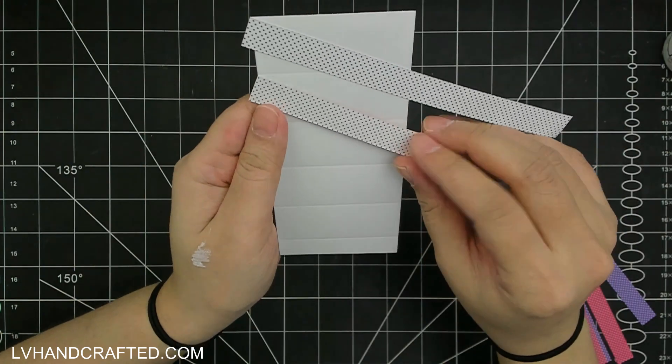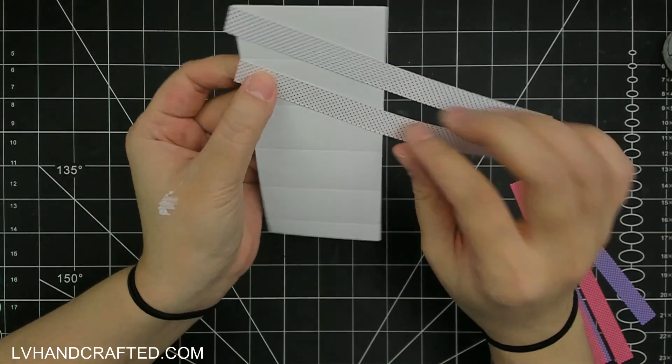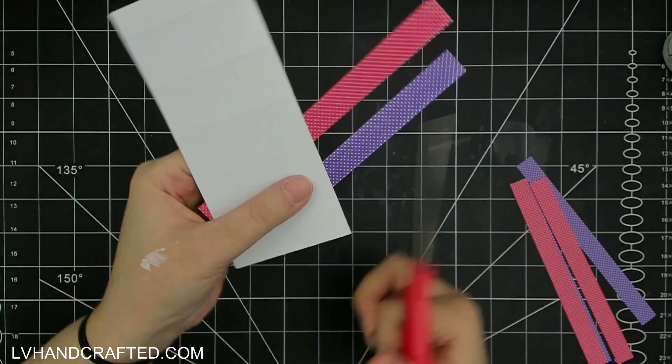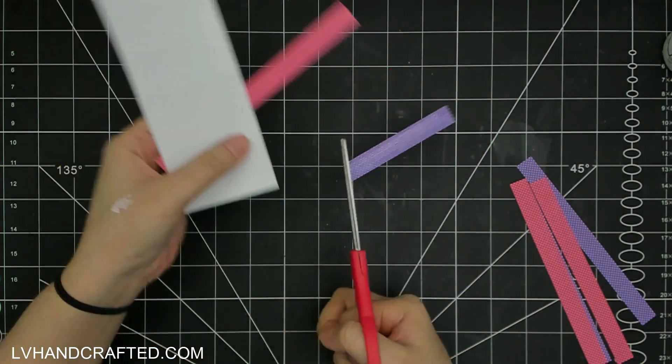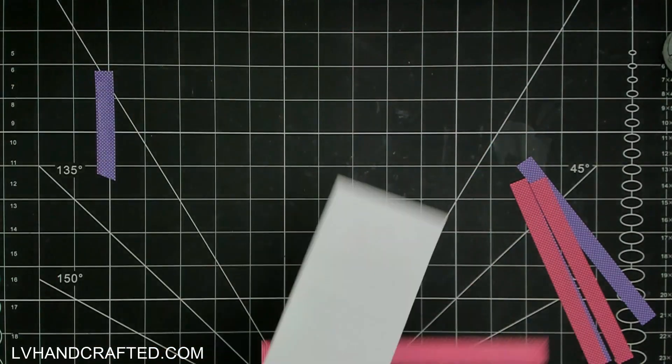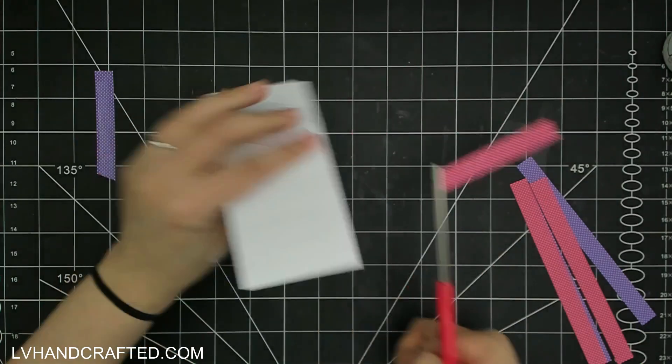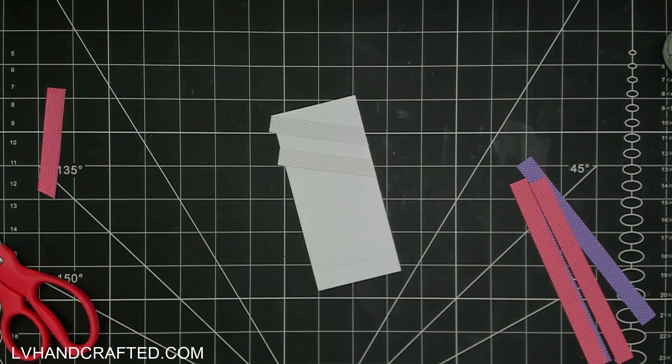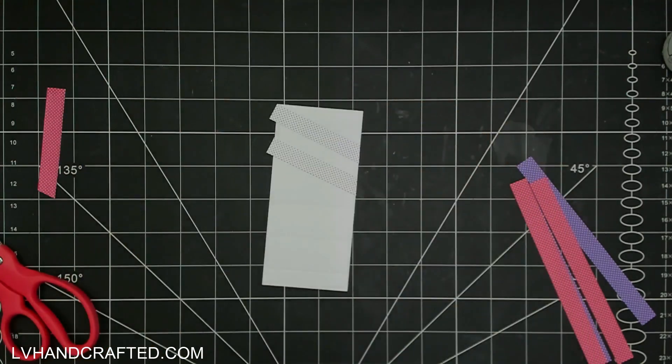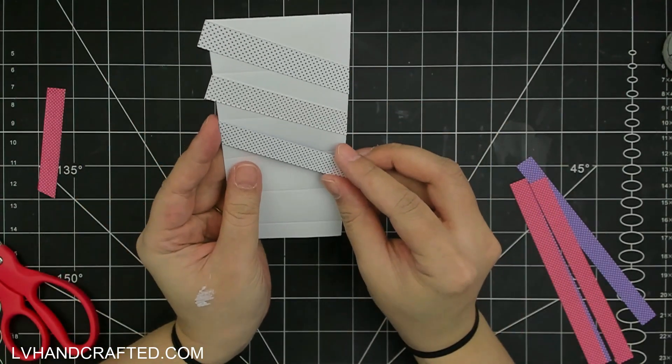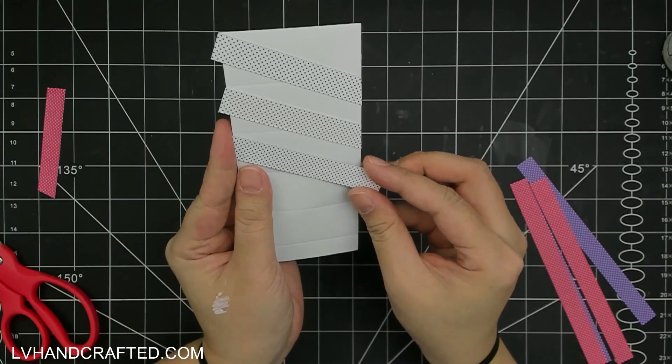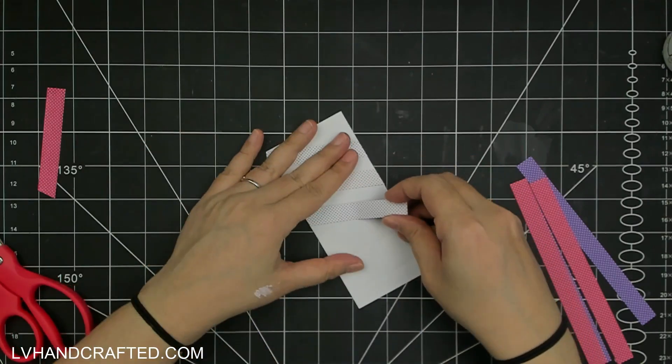Here what I'm doing is I'm using the score lines as a guide for how to place or position my strips of paper. So I'm lining up the top edge of my pattern paper, these half-inch strips, so the top edge extends from the top left edge of one score line.